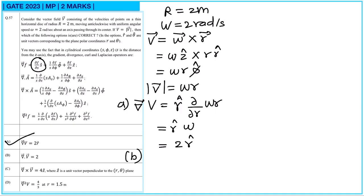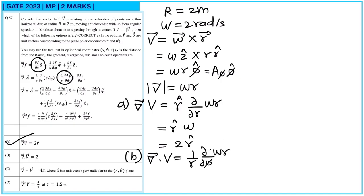For divergence of v: since v̄ = ωr·φ̂, we use the φ-component formula, giving (1/r)·∂(ωr)/∂φ. But there is no φ term in ωr, so the divergence equals 0. So option B is wrong.